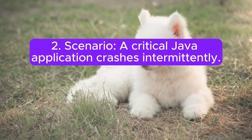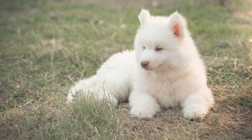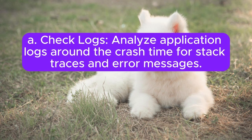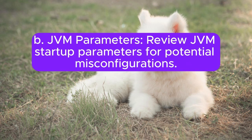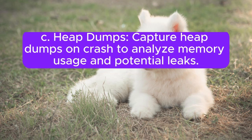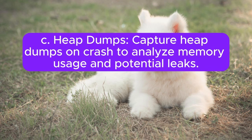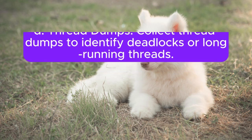Scenario 2: A critical Java application crashes intermittently. How would you approach troubleshooting this issue? Answer: A. Check logs — analyze application logs around the crash time for stack traces and error messages. B. JVM parameters — review JVM startup parameters for potential misconfigurations. C. Heap dumps — capture heap dumps on crash to analyze memory usage and potential leaks.